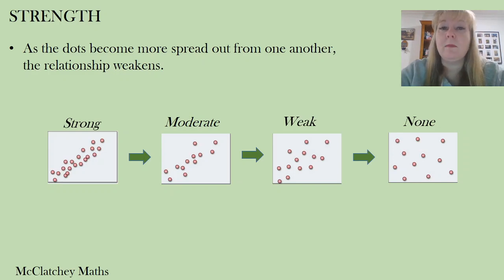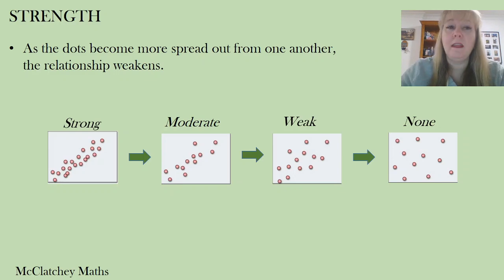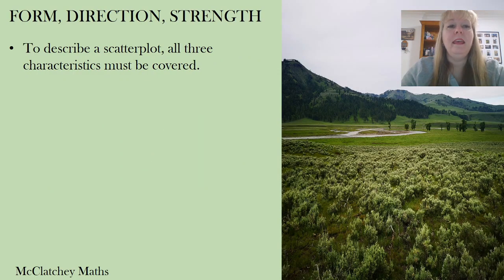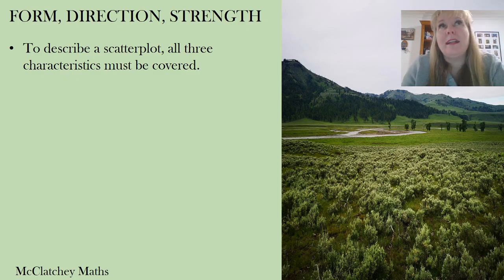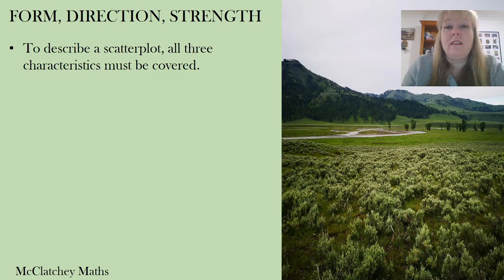In future videos we'll talk about Pearson's correlation coefficient, which is a way to mathematically calculate that strength and get a lot more precise. But for Year 10, the important thing is that you pick a strength — don't hedge. Make sure you cover all three characteristics: form, direction, and strength. When describing, you don't need to write a story — just a sentence is fine.